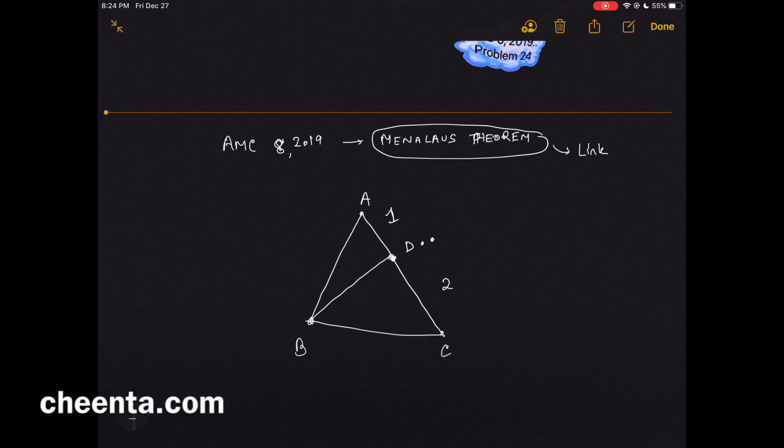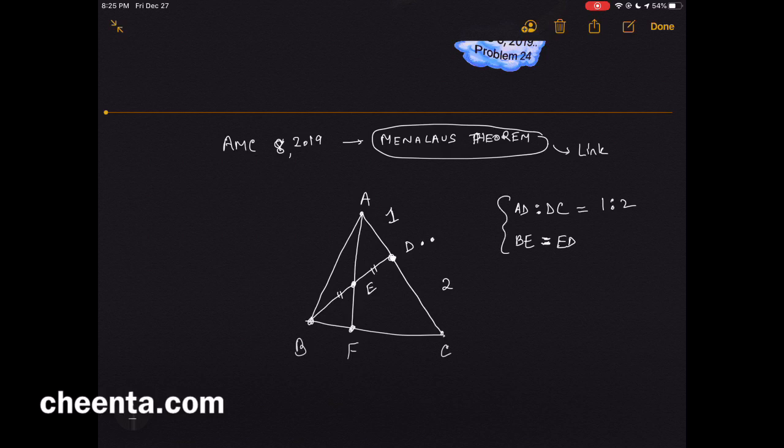Next we look at the midpoint of BD which is E. Join AE and produce it to meet BC at F. So this is the midpoint, so BE is given to be equal to ED. All of this is given information. AD over DC is equal to 1 to 2 and BE equals ED.